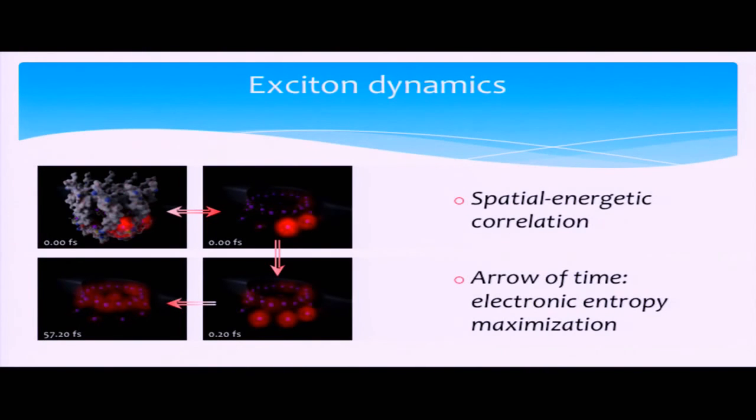The first, I've already discussed, it's the spatial energetic correlation in the electronic wave function. All this means is, as the electronic wave function decays in energy, it's also changing spatially. It's moving from the outer rings to the centralized core at a lower energy.